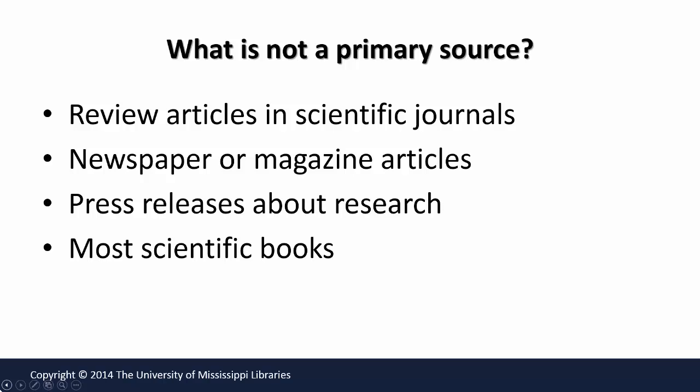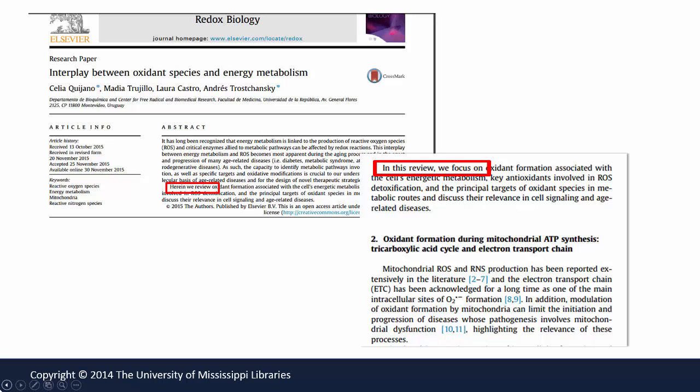Sometimes it can be tricky to identify if something is a primary source, especially if the topic of the article is very technical or if the article was published in a scientific journal. Let's look at an example. This article is from a scientific journal which publishes many primary source articles, but this article is different. By looking closely, we can see that the authors are writing a review article. They use words like "herein we review" and "in this review we focus on."